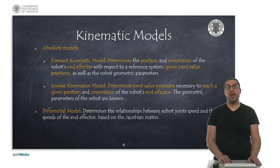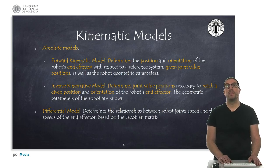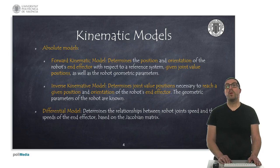A forward kinematic model allows to determine the position and orientation of the end effector from joint position values. An inverse kinematic model allows to obtain joint values that we need to apply in order to reach a given position and orientation of the end effector. Differential models allow to obtain a locally linear expression in terms of velocities. The Jacobian matrix is actually derived from the forward kinematic model.